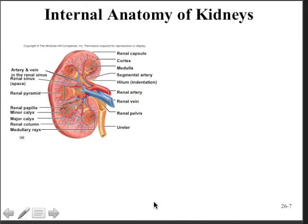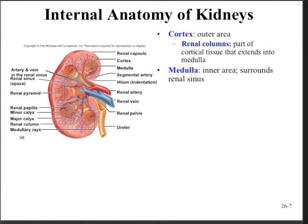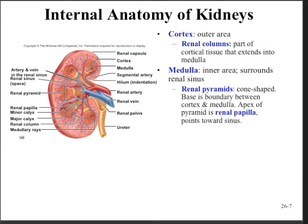Here you can see the internal anatomy in a sagittal cut through the kidney, showing internal features as well as the blood supply. The cortex is the outer layer beneath the capsule and above the medulla. The renal columns are cortical tissue that radiate between the renal pyramids, which have a striated appearance. The medulla is where the pyramids reside, and they surround the renal sinus. The pyramids are cone-shaped; the base is the boundary between the cortex and medulla, and the apex is the renal papilla, where urine is extruded into the minor calyx, then the major calyx, and then into the renal pelvis, which empties into the ureter.